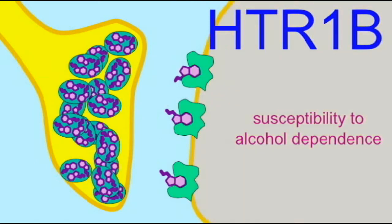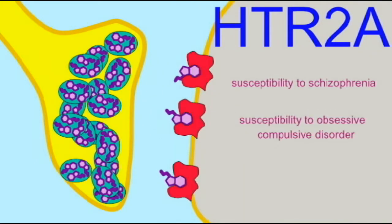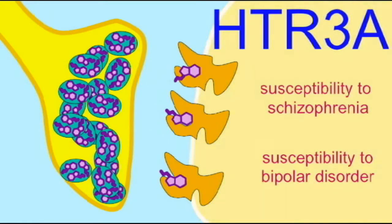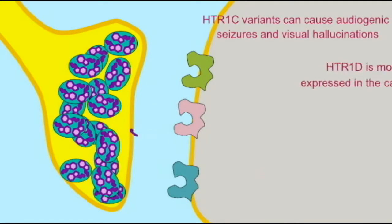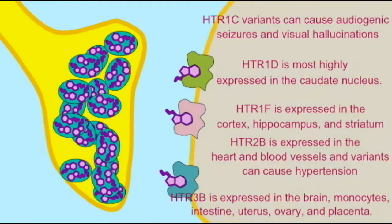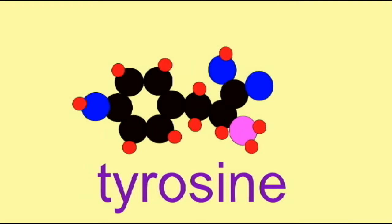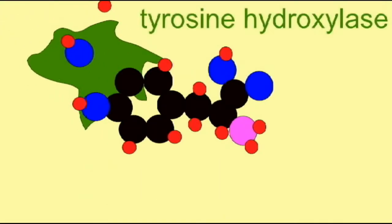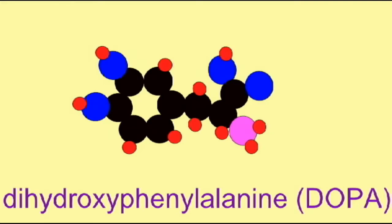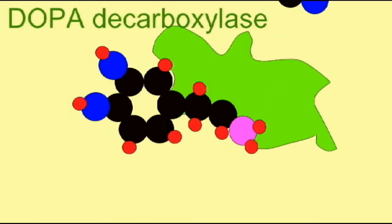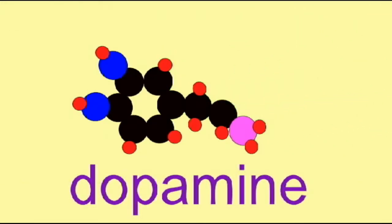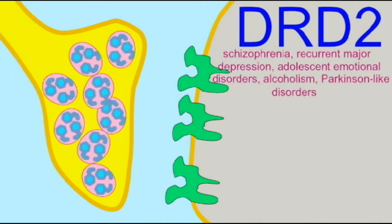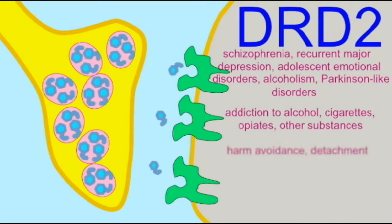Many neurons possess a variety of serotonin receptors which respond to this serotonin. Likewise, the amino acid tyrosine can be converted into the neurotransmitter dopamine, and there are a variety of dopamine receptors expressed throughout the brain.